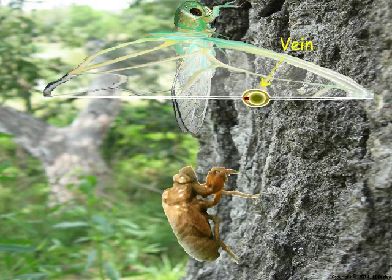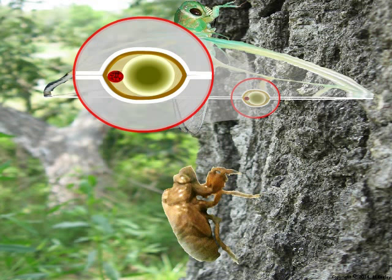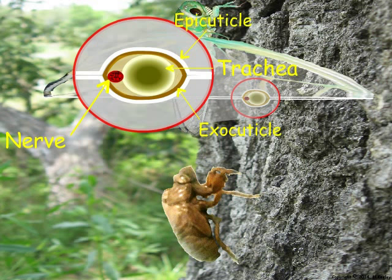Here is a cross-sectional view of the wing showing the presence of veins. Veins form around trachea as thickened regions comprised of epicuticle and sclerotized exocuticle. The veins provide structural support for the membranous areas and contain trachea and nerves. The veins also allow hemolymph flow through the wing to provide liquid to keep the wing from becoming overly dry and brittle.